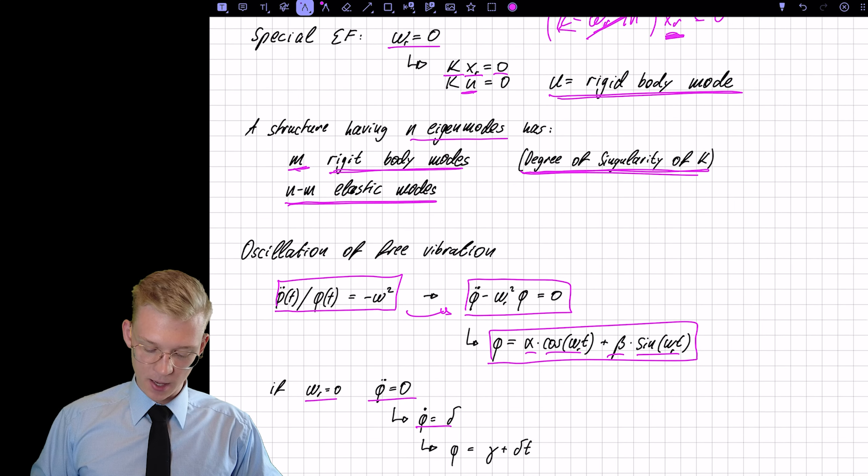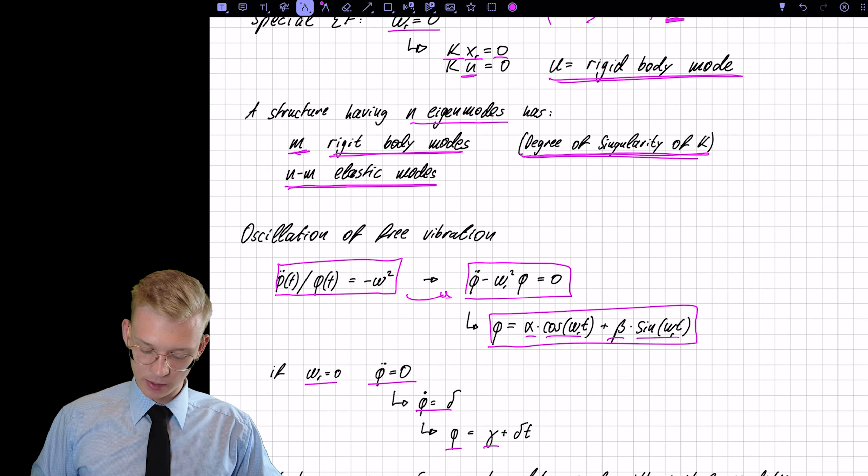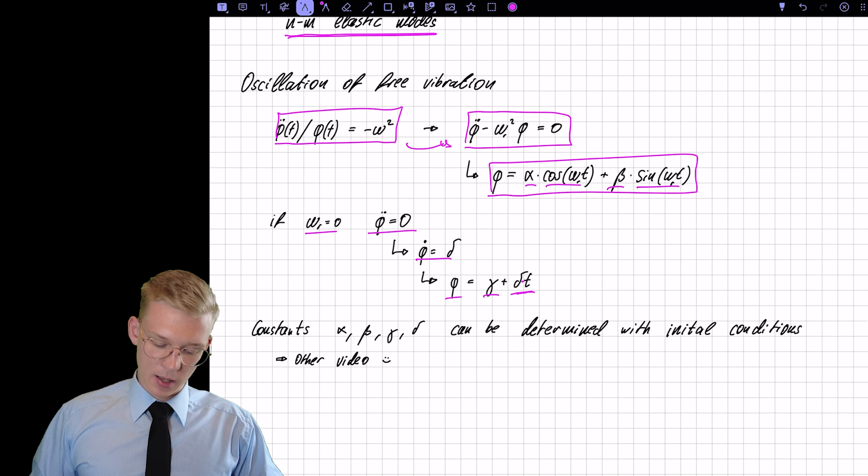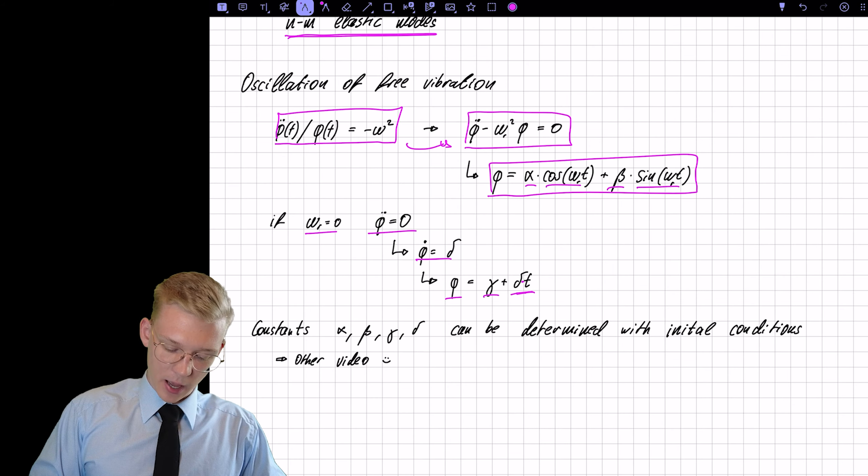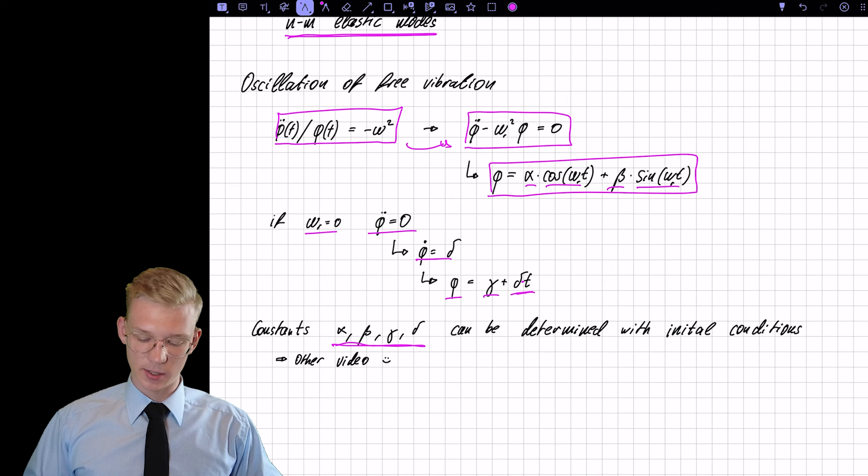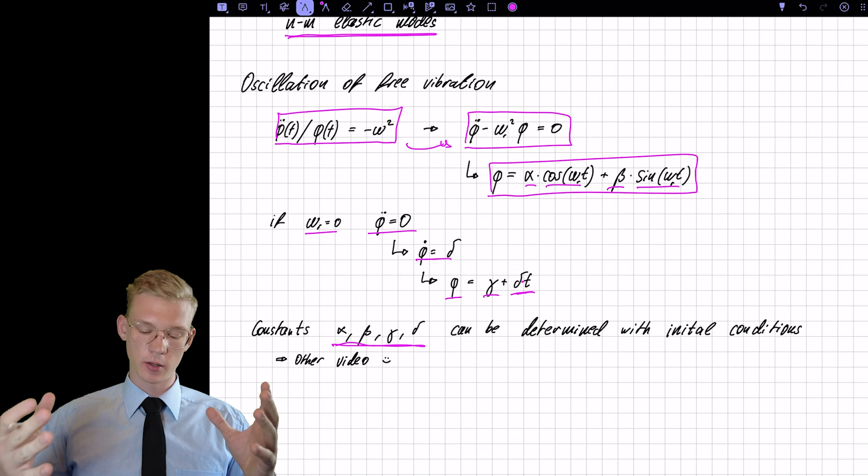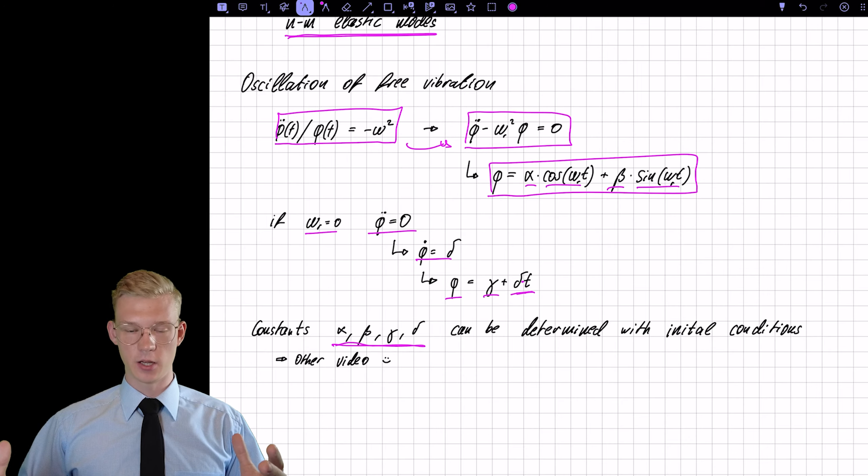And what if we have a omega that is zero? In this case, phi double dot is zero, phi dot is beta and phi itself is gamma times beta times t. You might ask yourself, how do I determine those constants? And these constants are determined with the initial conditions of that system. But this is for another video.